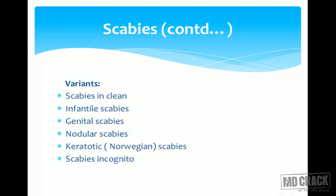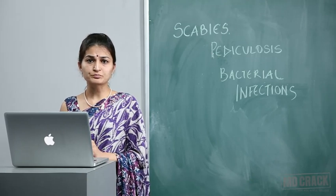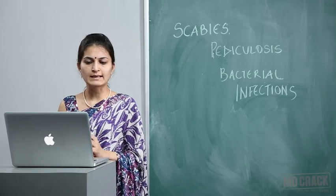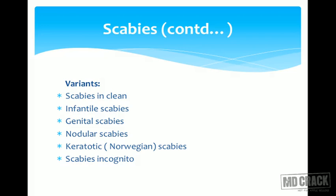The variants of scabies include: scabies in the clean, where patients have more symptoms but fewer manifestations, requiring strong clinical suspicion. Infantile scabies differs from adult scabies in that infants can have involvement of the scalp and face, unlike adults where areas below the neck are affected — this needs to be differentiated from atopic dermatitis. Genital scabies with exclusive genital lesions is a sexually transmitted infection. Nodular scabies presents with nodular lesions. Scabies incognito occurs when misapplied steroids alter the morphology of lesions — incognito meaning hidden. Keratotic or Norwegian scabies will be discussed later.